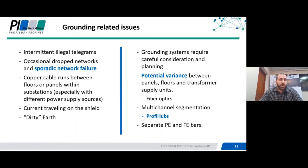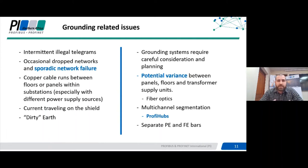The other type of grounding related issue is what I'd call a dirty earth, and this is where the discussion on functional earth versus protective earth comes in. Although they typically go to the same spike in the ground earth mat or transformer earth, you should probably have two separate cables to try to keep a clean high-quality earth and a separate protective earth, which would typically be noisy due to the components connected to it. Grounding systems require careful consideration and planning. Where there's a potential variance between panels, floors and transformers, utilize fiber optics where possible — especially when running between floors and different substations. Fiber optics will make your network completely immune to any potential variance issues.